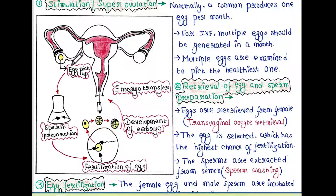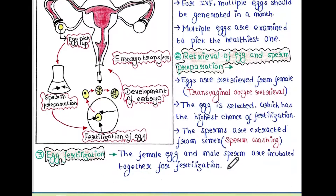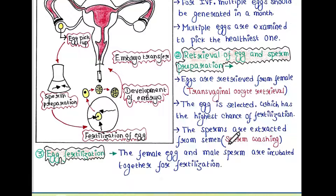The second step is retrieval of egg and sperm preparation. Eggs are retrieved from the female in a procedure called transvaginal oocyte retrieval. The egg with the highest chance of fertilization is selected, and its quality is checked.